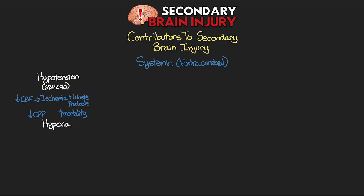The next contributor is hypoxia. Our brain is really sensitive to changes in oxygen supply as it has a high need for oxygen. Hypoxia in our patients can ultimately lead to hypoxemia, which can result in anaerobic metabolism leading to ischemia as well as the buildup of lactic acid, which can further cause damage. This can also result in cerebral vasodilation, which could potentially increase blood flow to the brain.